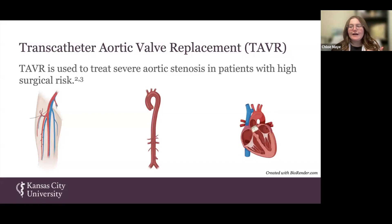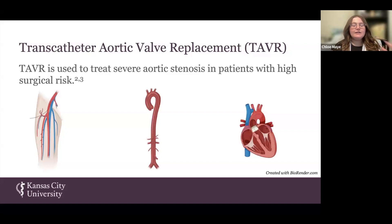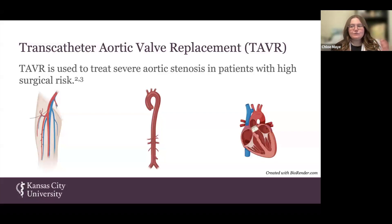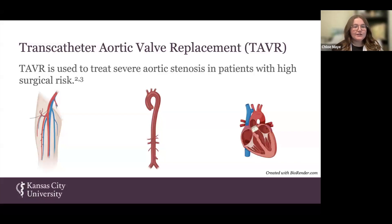This artificial valve can now act in place of the patient's native valve, but the native valve still remains attached to that aortic annulus. The addition of this artificial valve, however, can disrupt surrounding anatomy. As you can imagine, we have an artificial valve in there, we have a native valve in there — it can get a little bit crowded — and this disruption can lead to the development of coronary ostial obstruction, or COO.